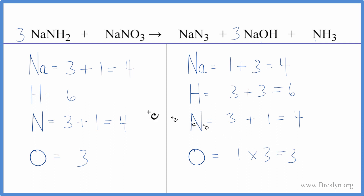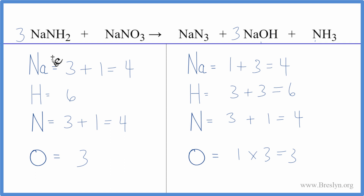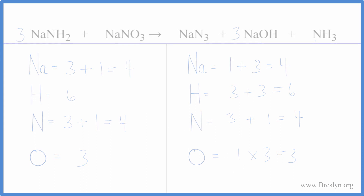This equation is a little tricky because you end up needing to change a coefficient twice, which sometimes makes it more difficult. But this is the correct balanced equation for NaNH₂ plus NaNO₃. This is Dr. B — thanks for watching.